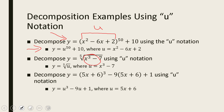One more example: y equals (5x plus 6)³ minus 9(5x plus 6) plus 1. Since 5x plus 6 appears twice, we let u equal 5x plus 6. Then y equals u³ minus 9u plus 1, where u equals 5x plus 6. This won't come up too often, but it's a useful technique.